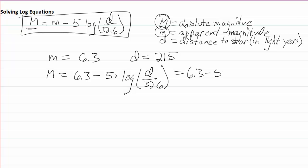6.3 minus 5 times the log of 215 over 32.6. Because of the way this is written, it's understood that this is a log base 10. You may have learned in your class that if a logarithm doesn't have a base explicitly written on it, then it's base 10.